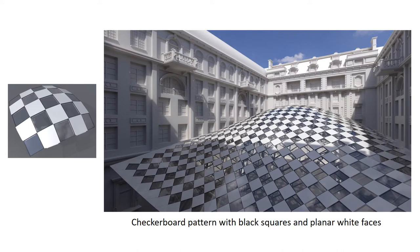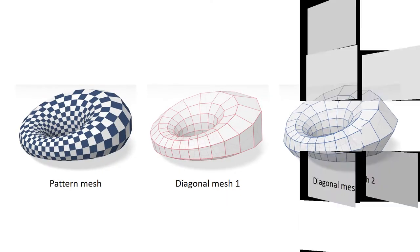For many applications such as architecture, it is very useful to also have planar white faces. It is achieved when the pattern and the two diagonal meshes are all planar quad meshes. Such patterns follow the principal curvature lines of a smooth underlying reference surface.